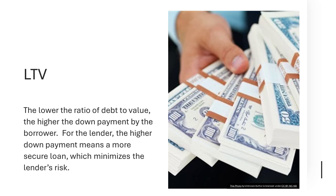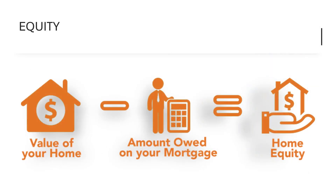Before we discuss loan-to-value further, let's talk about equity. What is equity? Your home's value minus all debts and liabilities against the home. Liabilities include mortgages, liens, special assessments, and delinquent property taxes. However, typically we think of it as: the home's value minus debts equals equity.